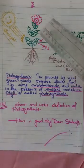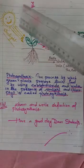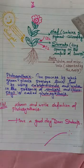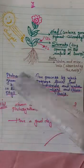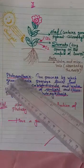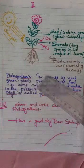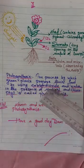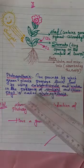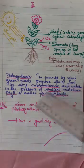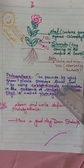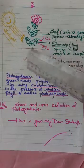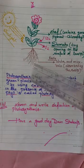I have made a diagram of a small plant here which will help us discuss the process of photosynthesis. The definition of photosynthesis: the process by which green plants prepare their own food by using carbon dioxide and water in the presence of sunlight and chlorophyll is called photosynthesis. We will discuss photosynthesis in detail in our next class.